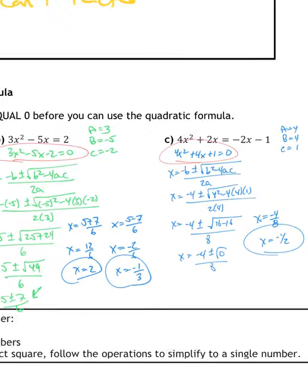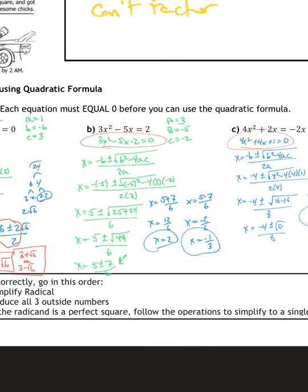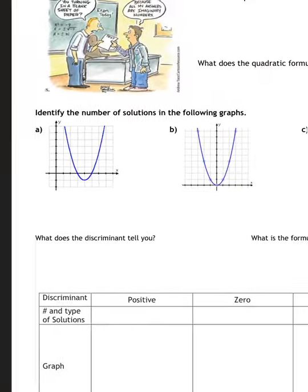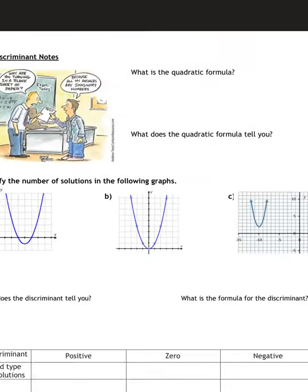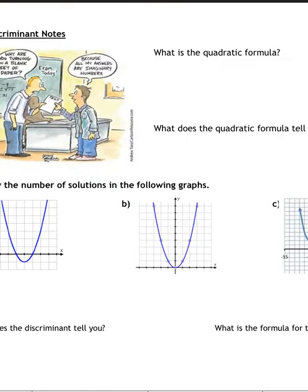So, simplification notes: simplify the radical, reduce all three outside numbers and the radicand. If it's a perfect square, follow those operations to get a single number or two solutions. That covers the first set of examples.